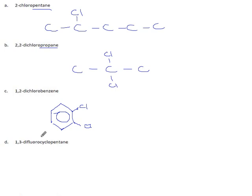1,3-difluorocyclopentane. Cyclopentane means five carbons in a ring. There we are. Now, carbons one and three have fluorines on them. So, there's a fluorine. That's carbon number two. It doesn't get anything. And carbon number three gets a fluorine.